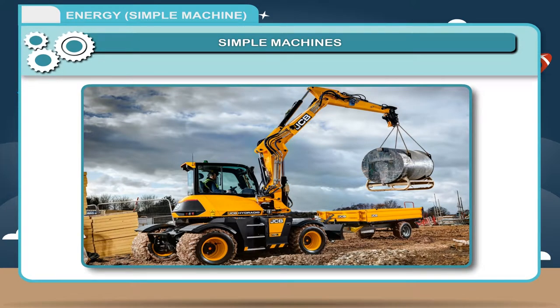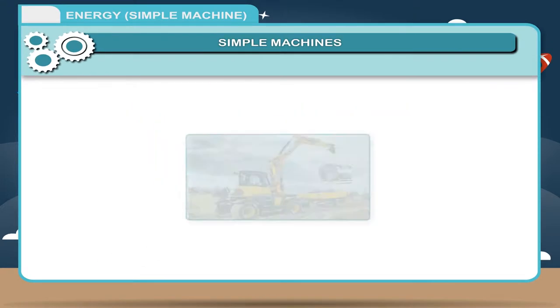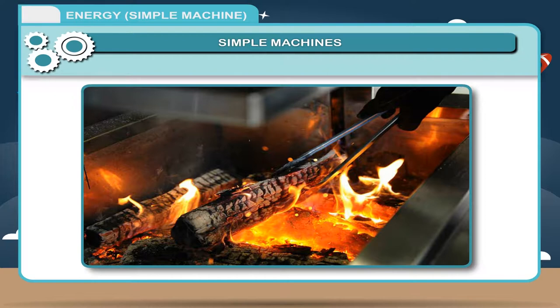Machine helps in carrying out unsafe and dangerous tasks. Example: Pair of tongs can be used to lift a piece of burning coal from fire.